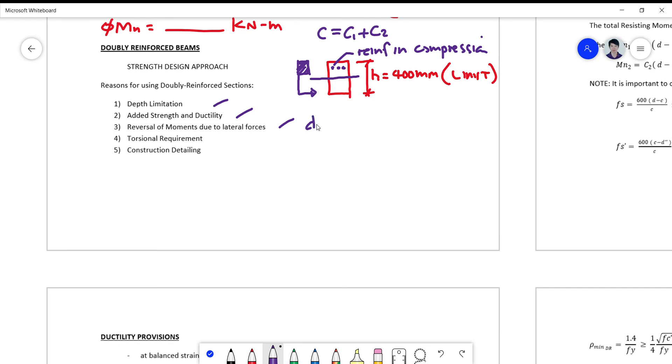your compression side reverses in terms of its location. Sometimes it's at the top fiber, sometimes it's at the bottom fiber. So due to that, we need to add a reinforcement